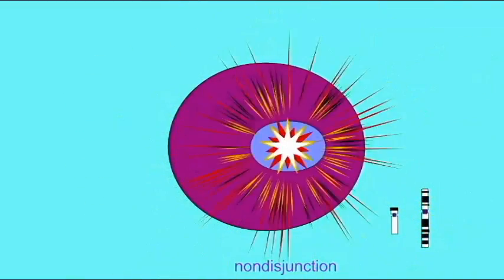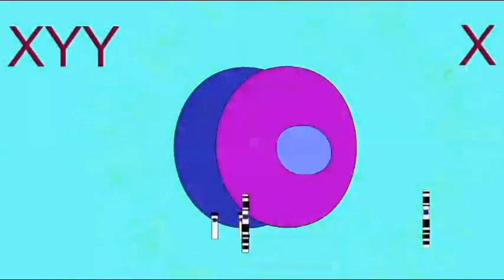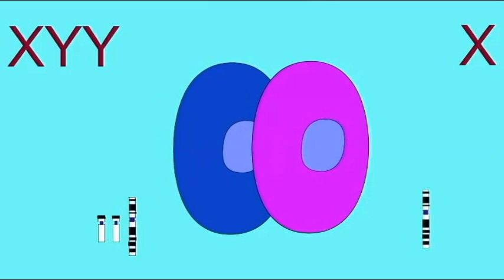If a non-disjunction of chromosomes occurs in the first division of the zygote as it's forming the two-cell stage, then all of the cells of the embryo will have an abnormal number of chromosomes.